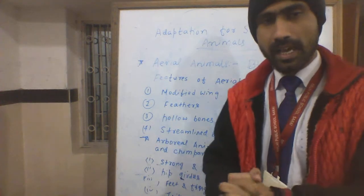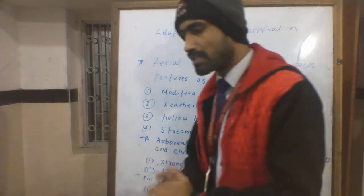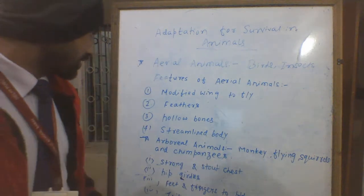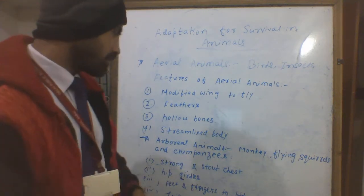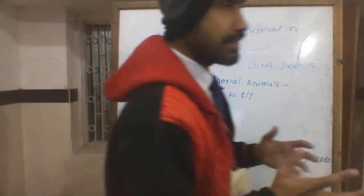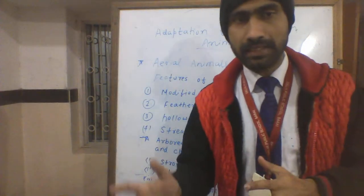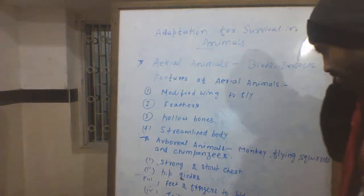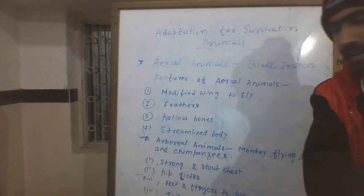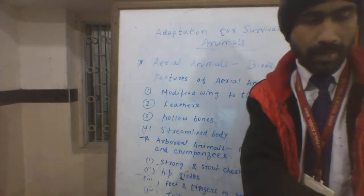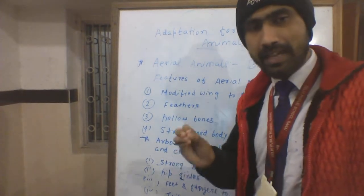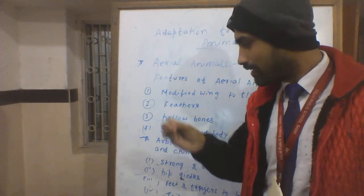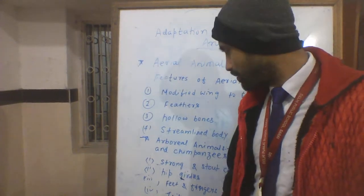These are the main adaptive features of aerial animals which help them survive. Next, we have arboreal animals. Animals that mostly live on trees are called arboreal animals. Examples include monkeys, flying squirrels, and chimpanzees.